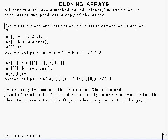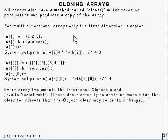All arrays have got a method called clone, which takes no parameters and produces a copy of the array. Now for multi-dimensional arrays, only the first dimension is copied. That's not really too surprising if you think about it, because multi-dimensional arrays are really done just as arrays of arrays.